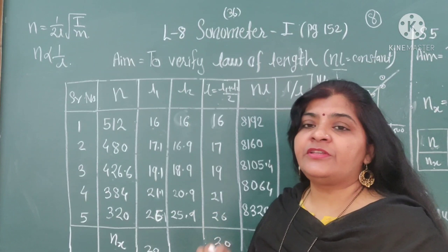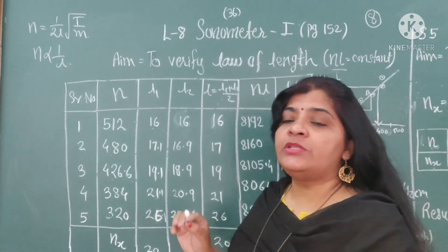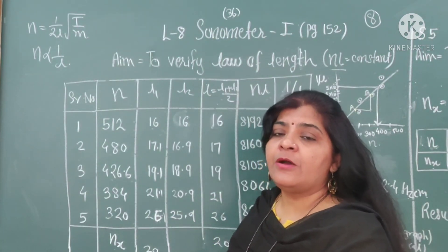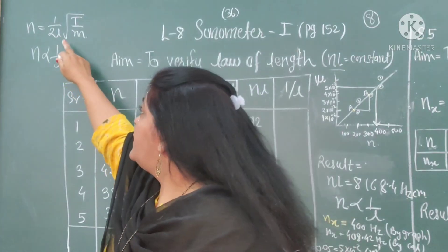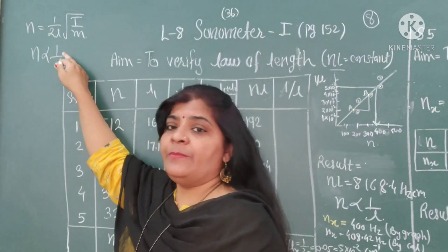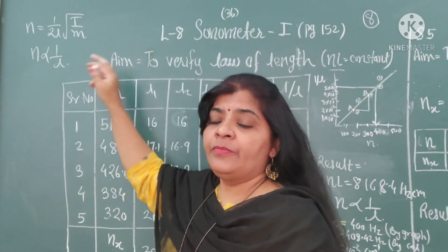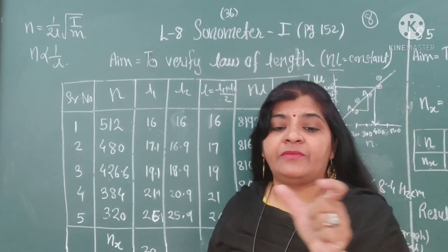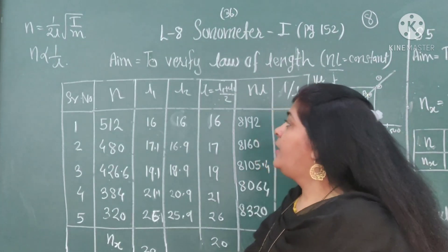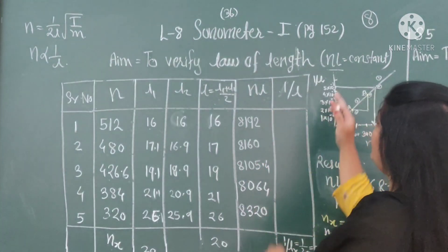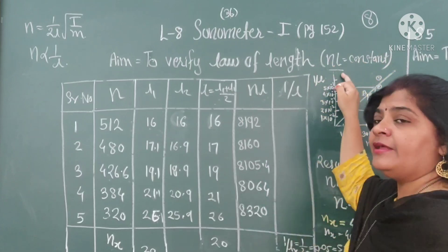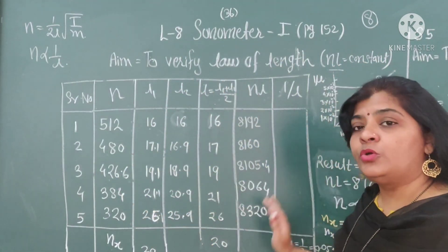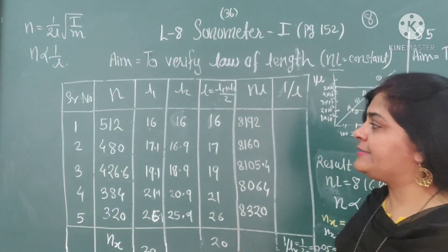Here, T is the tension attached to the string, small m represents the mass per unit length, and N is the vibrating length. This vibrating length measures the distance between the two knife edges. Next is our NL — we need to find out NL. This is the observation table you have to draw in the exam.